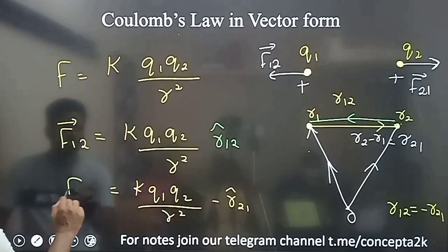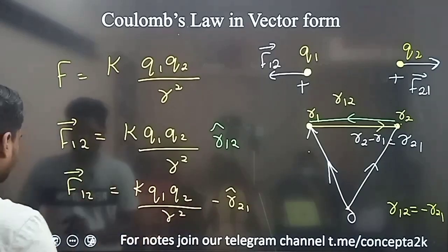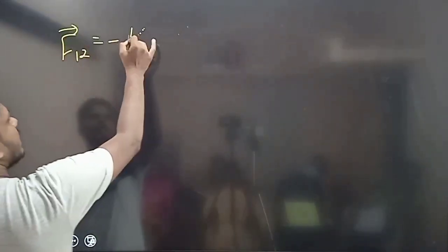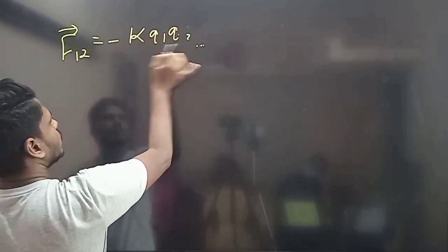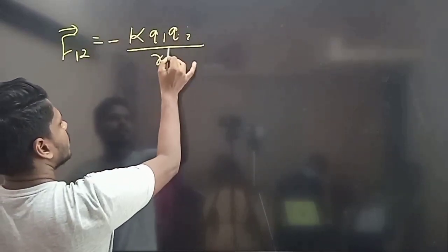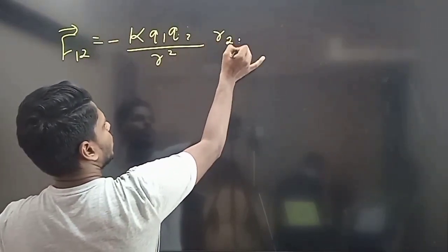F12 is equal to minus kQ1Q2 / r² times R21-cap. So F12 equals minus K Q1 Q2 by r-square, R21 cap.